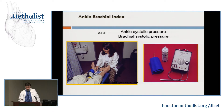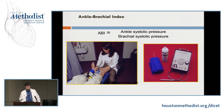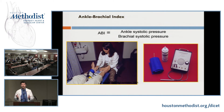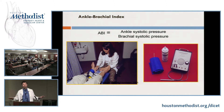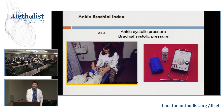You gradually release the pressure, and the ankle systolic pressure is when you first hear Doppler flow. You express that over the brachial systolic pressure. What should the ABI equal in a normal individual? It should be 1 to 1.2. Actually, the systolic pressure can be a little higher at the ankle because of pulse wave reflections in a normal individual — the leg is longer than the arm and you have pulse wave amplification.